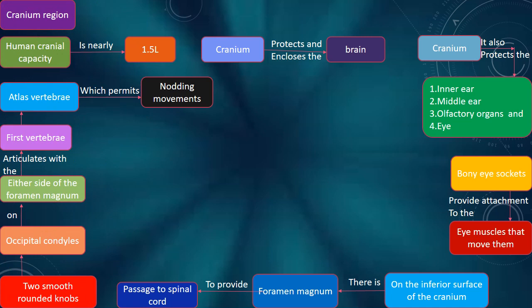The cranium region has a capacity of nearly 1.5 liters. The cranium protects and encloses the brain. It also protects the inner ear, middle ear, olfactory organs, and eye.